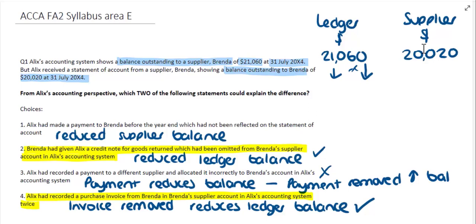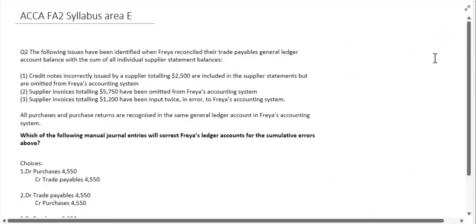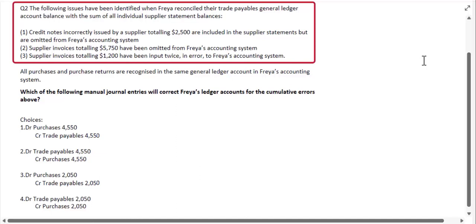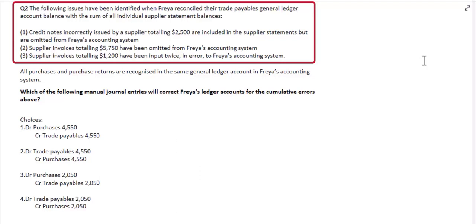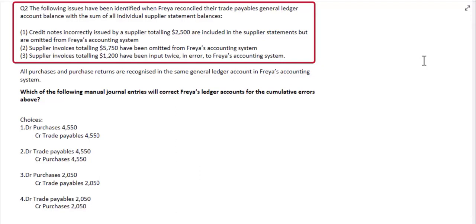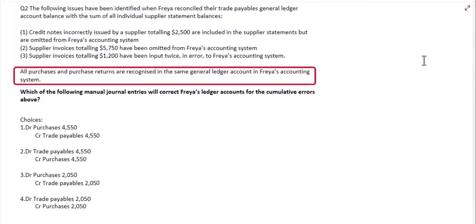Our next question relating to Syllabus Area E looks at issues identified when Freya reconciled their trade payables general ledger and account balance with the sum of all individual supplier statement balances — a supplier control account reconciliation. It gives us three issues: first, credit notes incorrectly issued by a supplier totaling $2,500 are included in the supplier statements but have been omitted from Freya's accounting system. Second, supplier invoices totaling $5,750 have been omitted from Freya's accounting system. Third, supplier invoices totaling $1,200 have been input twice in error to Freya's accounting system.